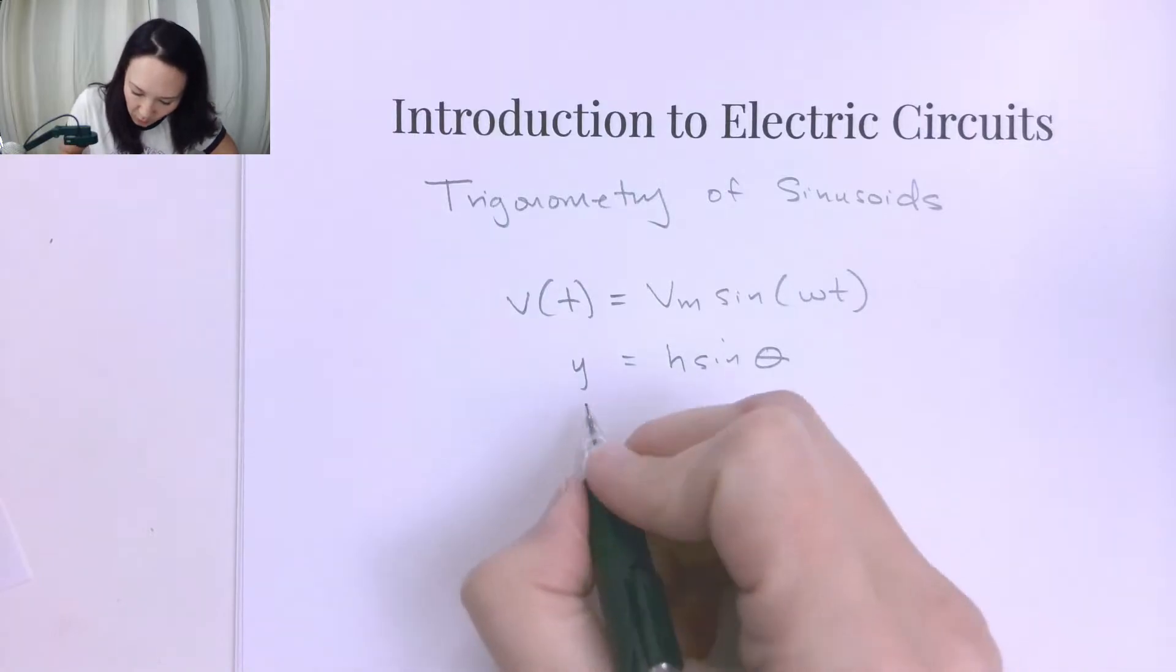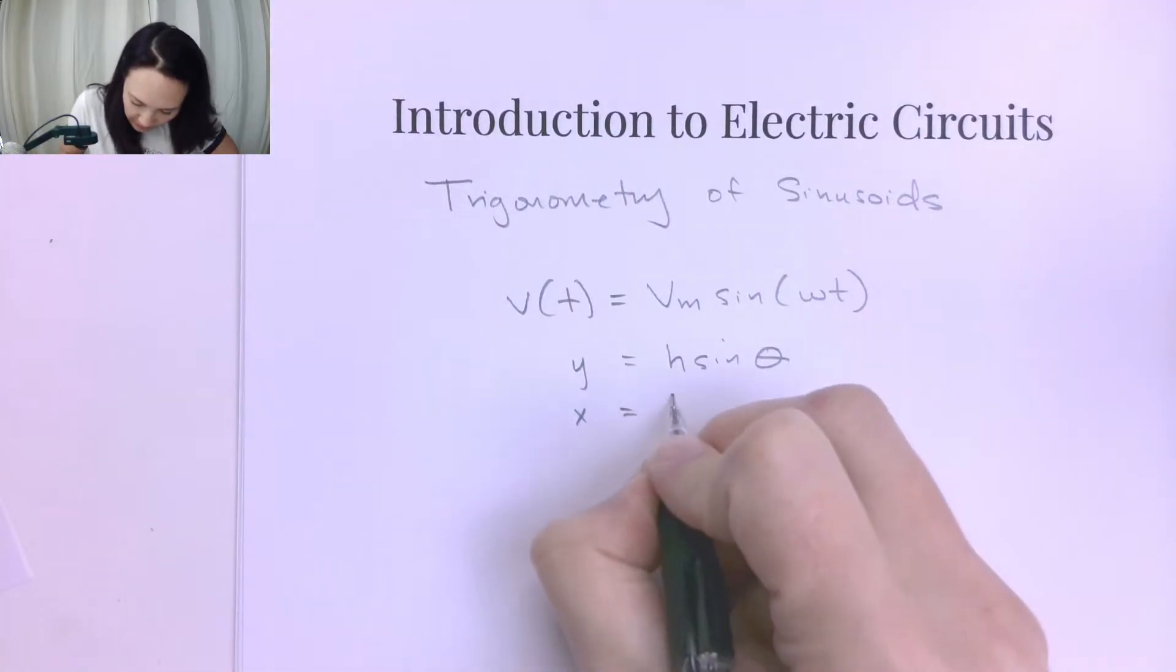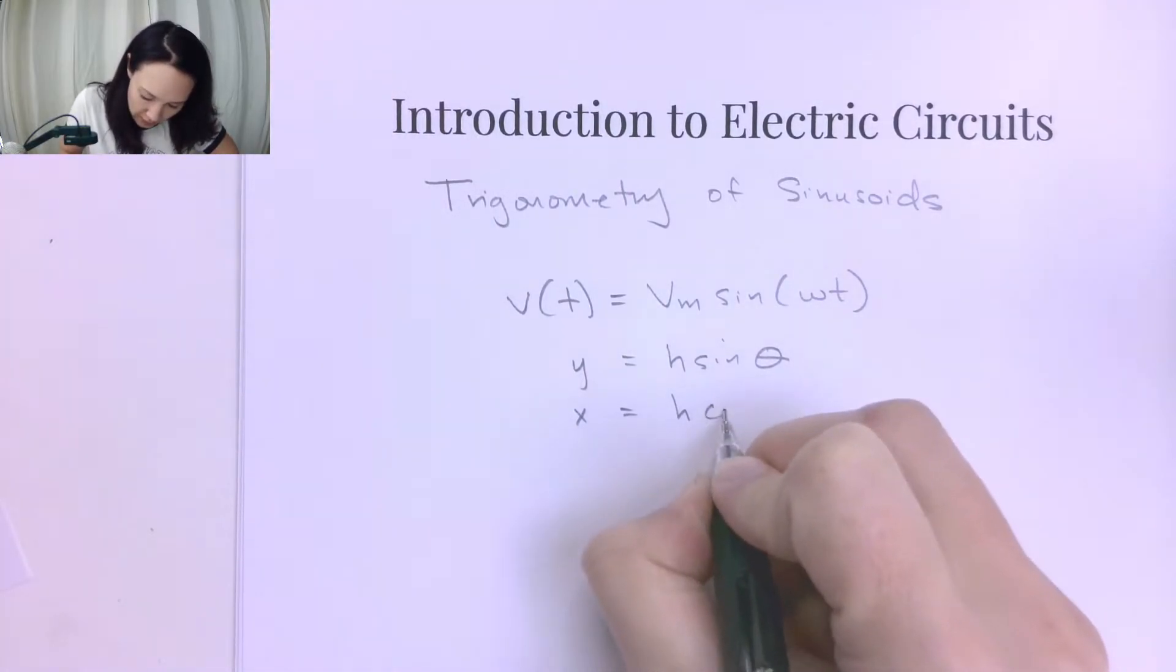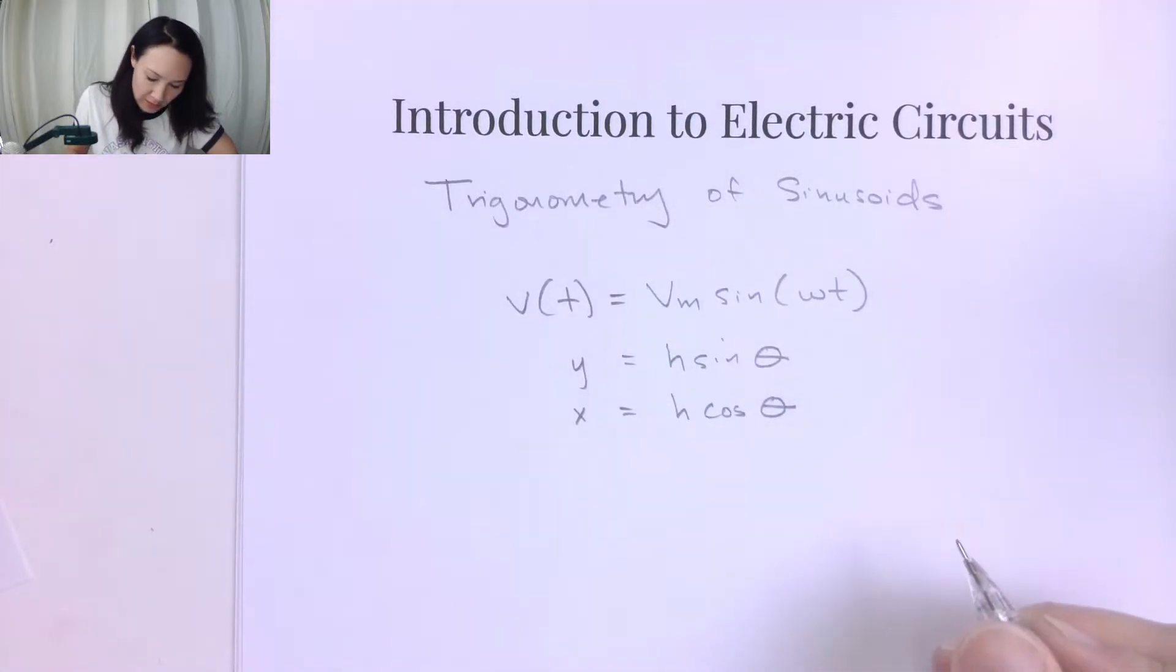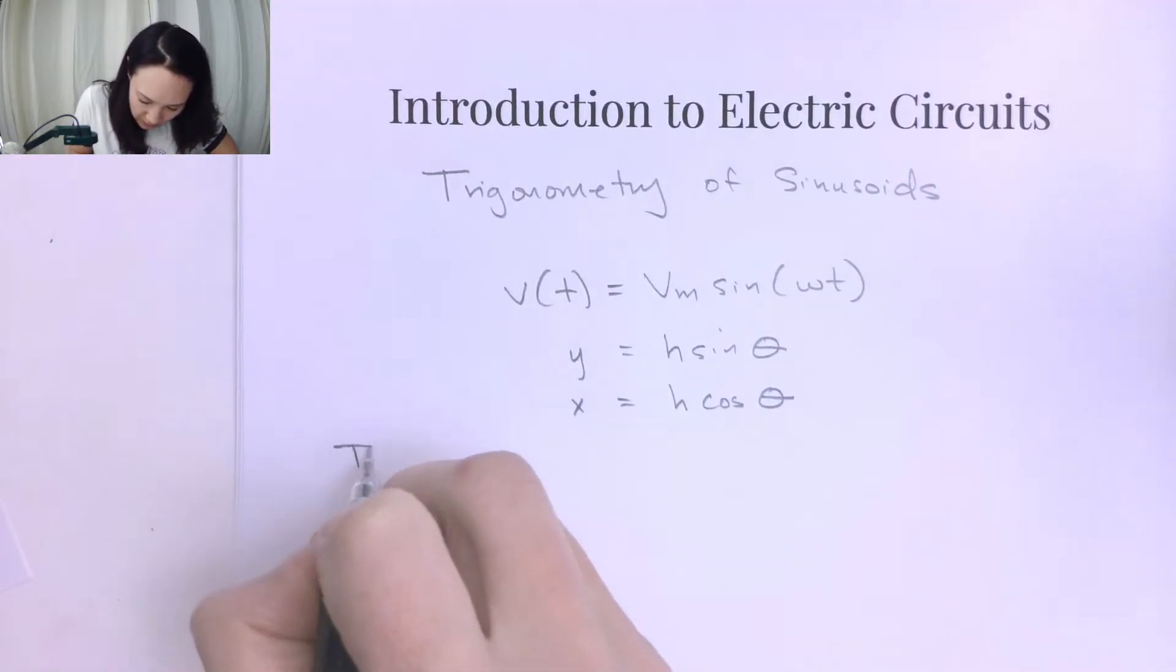So if this is our Y value, then the corresponding X value is H cosine theta, and the reason why this works is from these trig definitions.